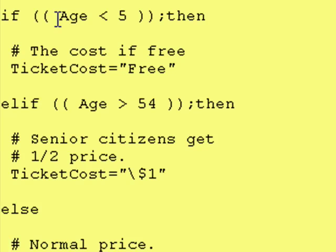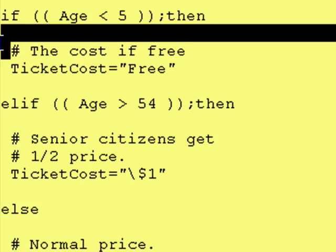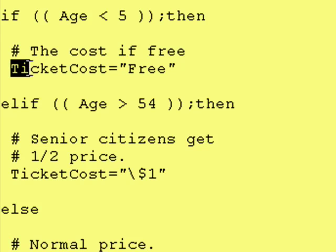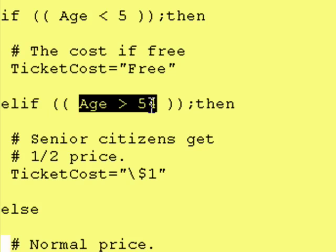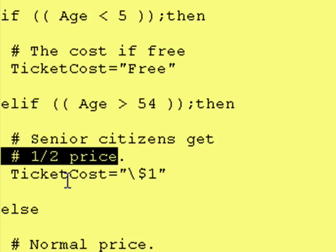We test to see if the age is less than 5. If it is less than 5, then we execute this block of code all the way up until the else if statement, and that just says the ticket cost is free. However, if the age is not less than 5, then we run a second test with the else if. We say age is greater than 54 — if it is, then they're a senior citizen and their ticket is half price, so it's $1.